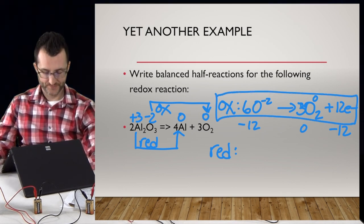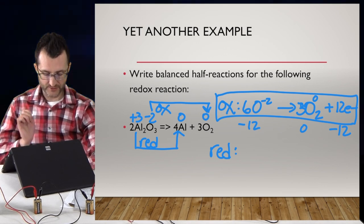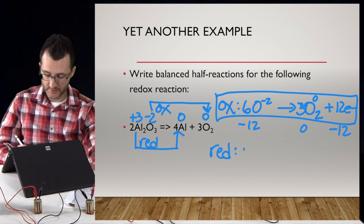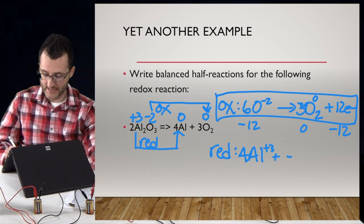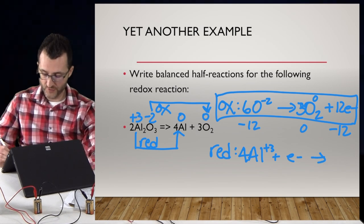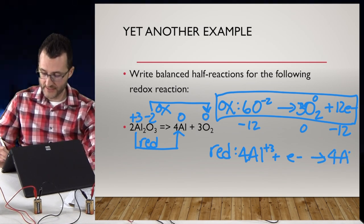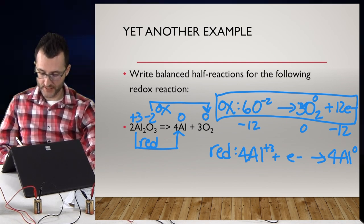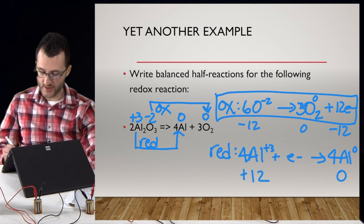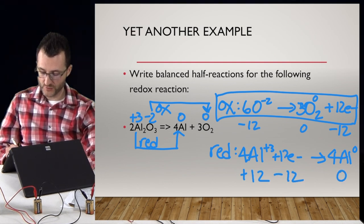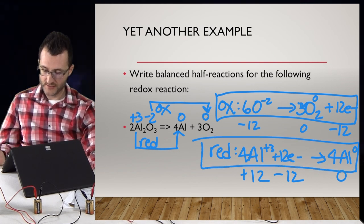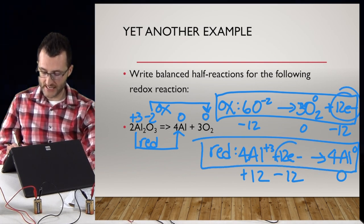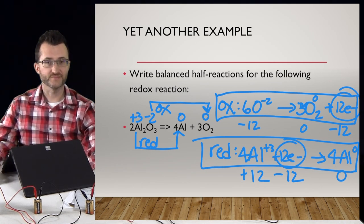For the reduction half-reaction: Al in the compound is 4Al³⁺ (distributing the coefficients). We're gaining electrons, so electrons go on the left: 4Al³⁺ + e⁻ → 4Al⁰. Total charge on the left is plus twelve (four times plus three), going to zero on the right, so we need twelve electrons: 4Al³⁺ + 12e⁻ → 4Al. Lost twelve in oxidation, gained twelve in reduction — equal.